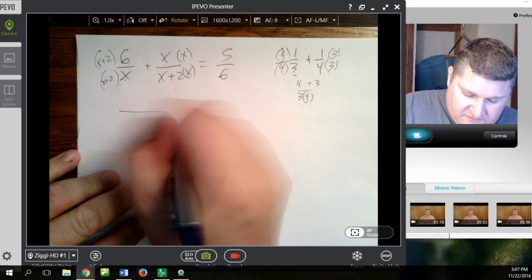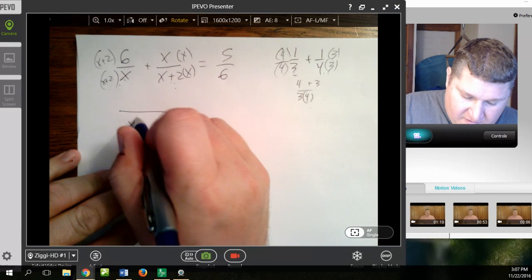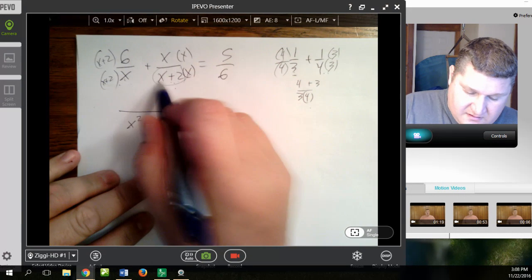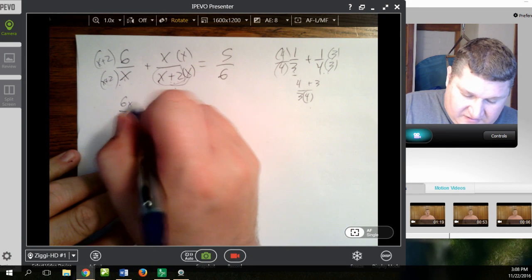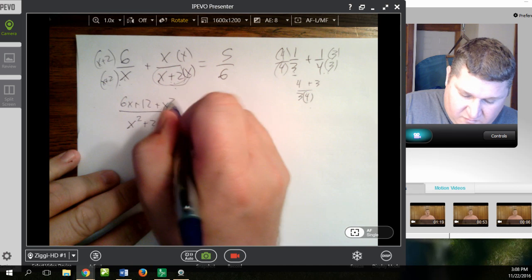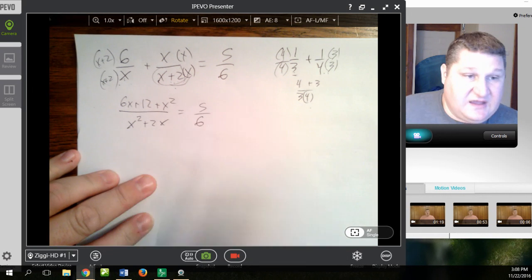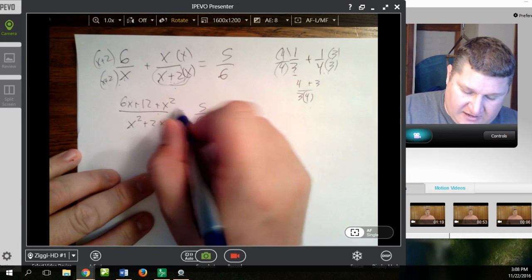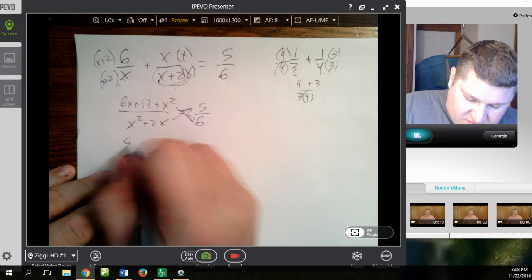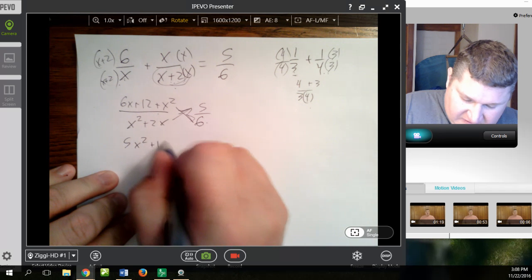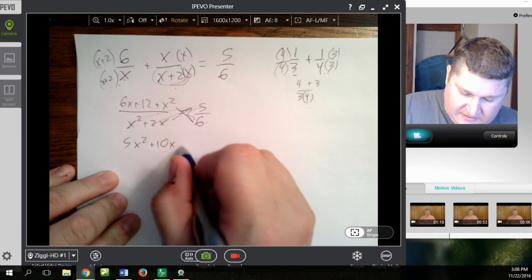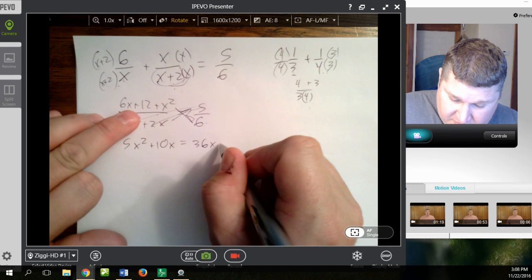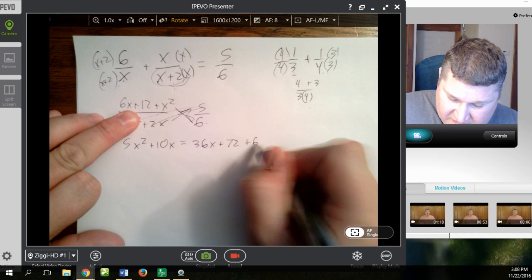So, if I do all this, I come up with x squared plus 2x on the bottom, because I have to give it away. And up top, I have 6x plus 12 plus x squared equals 5 over 6. Again, I'm down to 1 fraction equals another fraction. So, therefore, all I have to do is cross multiply 5x squared plus 10x, because I give the 5 away, equals 36x plus 72 plus 6x squared.